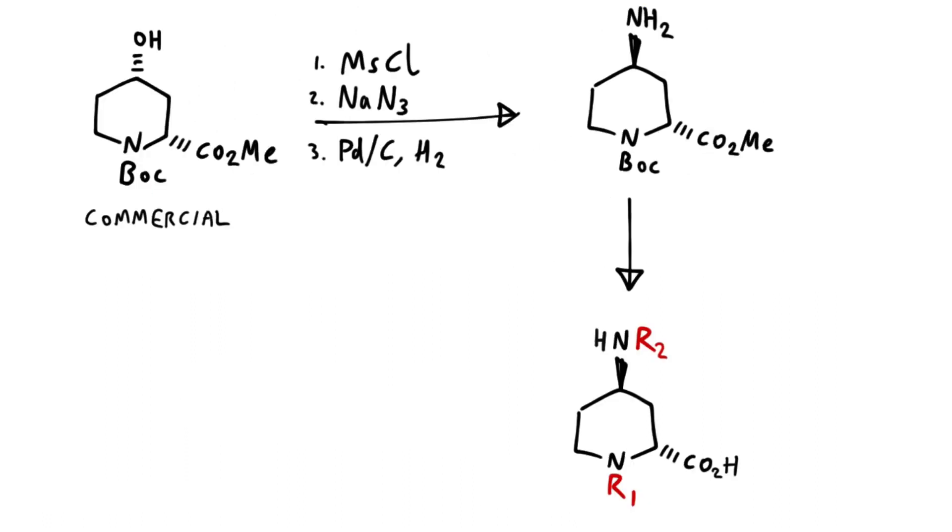The 2011 route starts with this commercially available Boc-protected piperidine building block. The stereochemistry is inverted at this position by converting the OH to a leaving group via mesylation. The mesylate is displaced with sodium azide, and then the azide is reduced using palladium carbon and hydrogen.